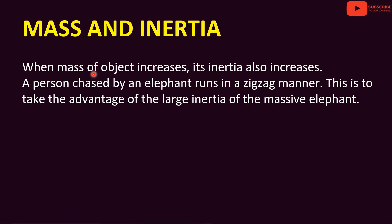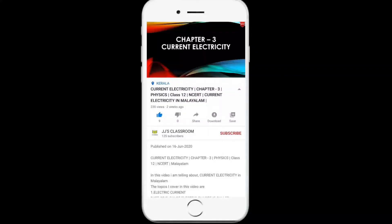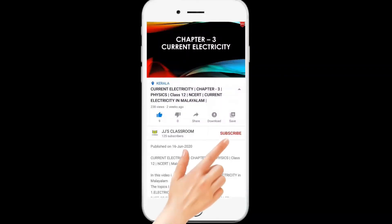A person chased by an elephant runs in a zigzag manner. This is to take advantage of the large inertia of the massive elephant, which cannot change direction easily. Thank you.